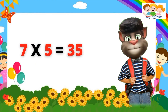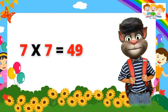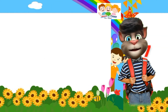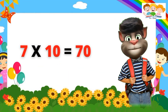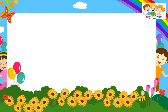Seven five's are thirty-five. Seven six's are forty-two. Seven seven's are forty-nine. Seven eight's are fifty-six. Seven nine's are sixty-three. Seven ten's are seventy. Seven one's are seven. Seven two's are fourteen. Seven three's are twenty-one. Seven four's are twenty-eight. Seven five's are thirty-five. Seven six's are forty-two. Seven seven's are forty-nine. Seven eight's are fifty-six. Seven nine's are sixty-three. Seven ten's are seventy.